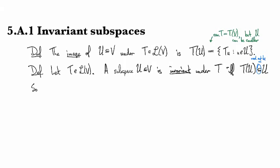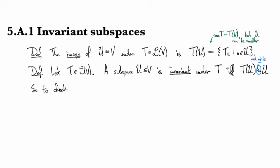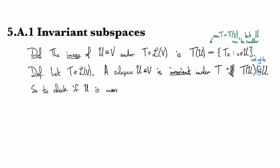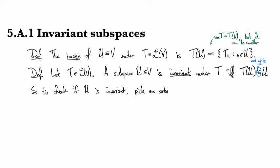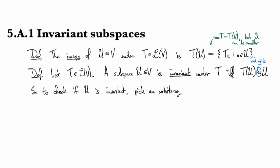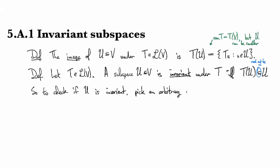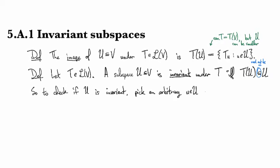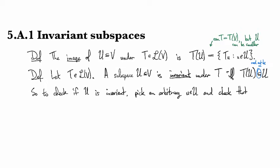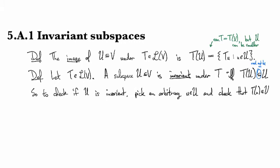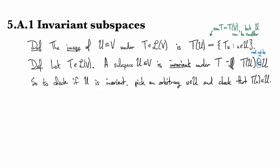Based on this definition, if you want to check if U is invariant, what you need to do is pick an arbitrary element of U and check that T of it is back in U again.